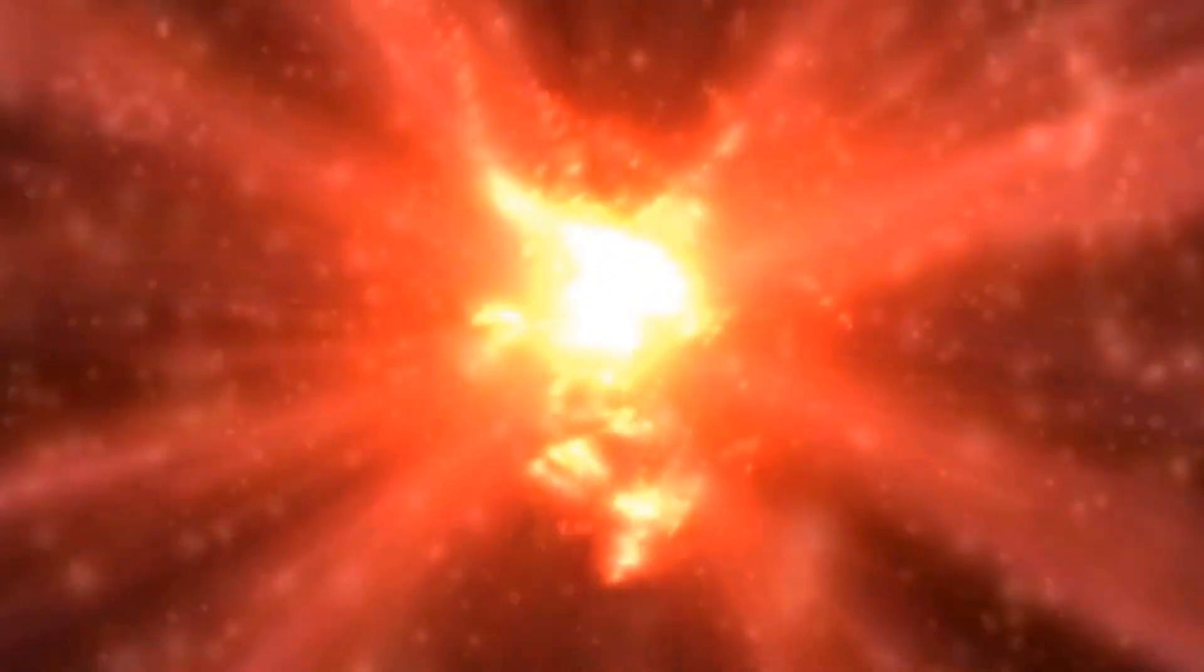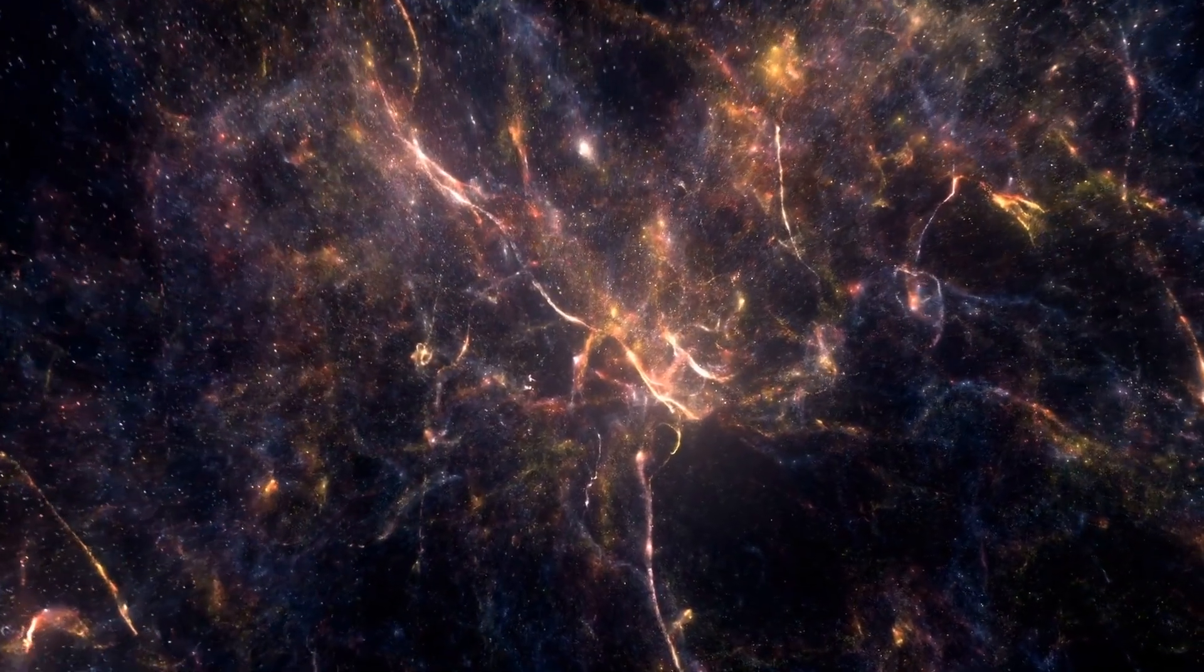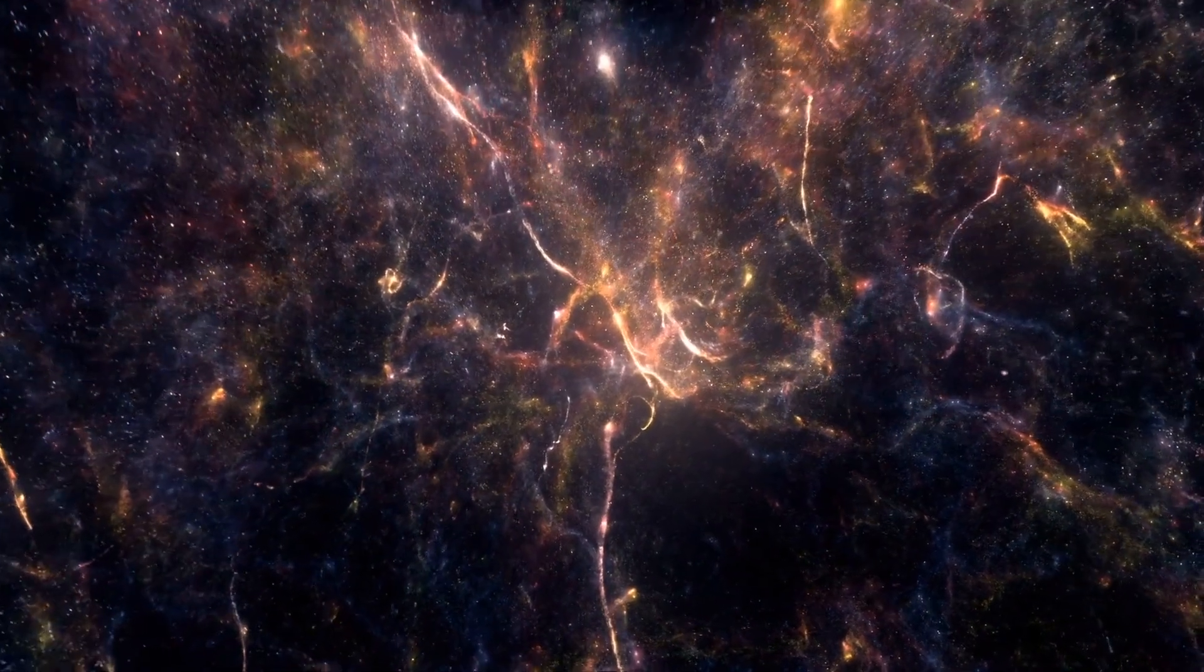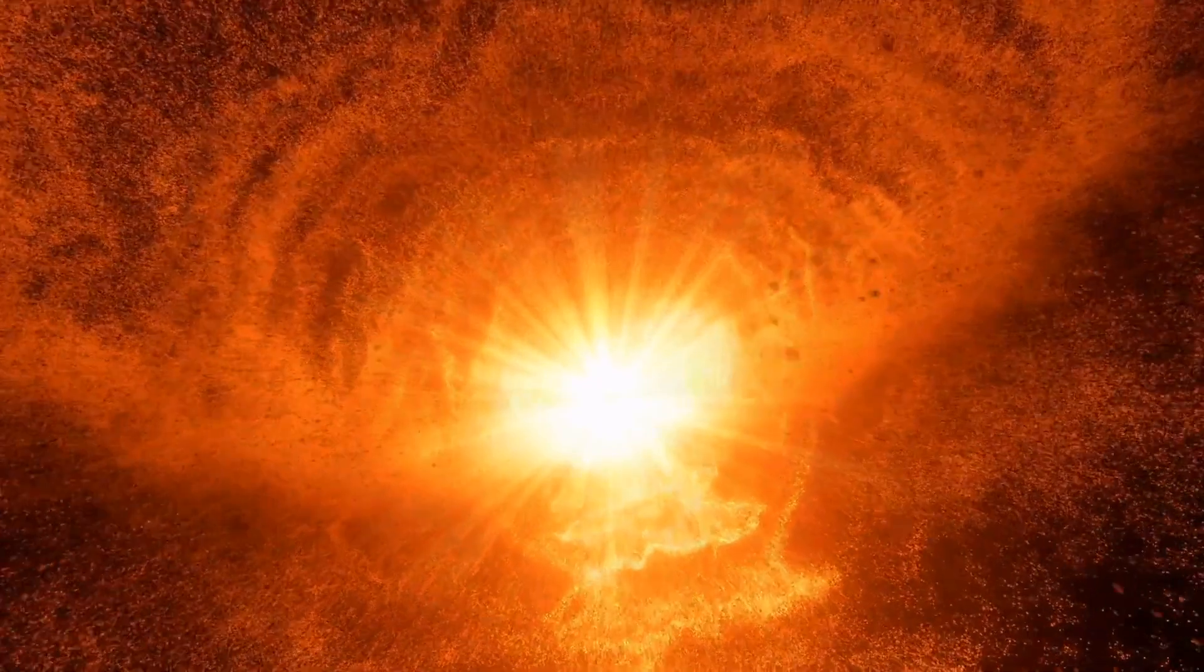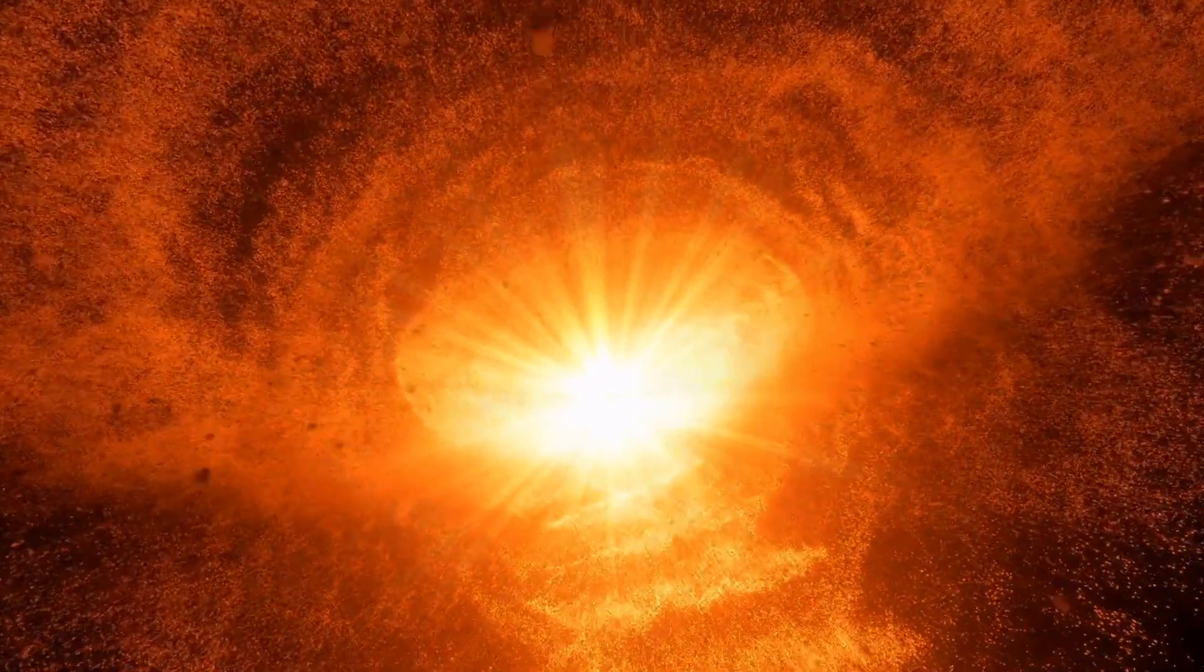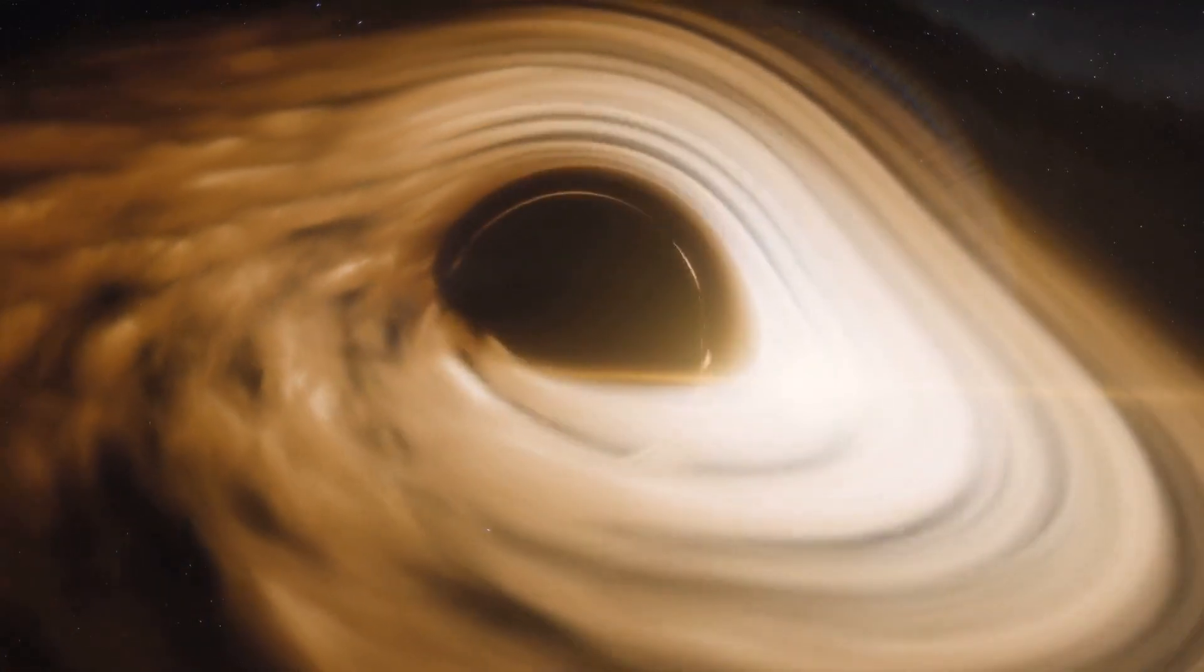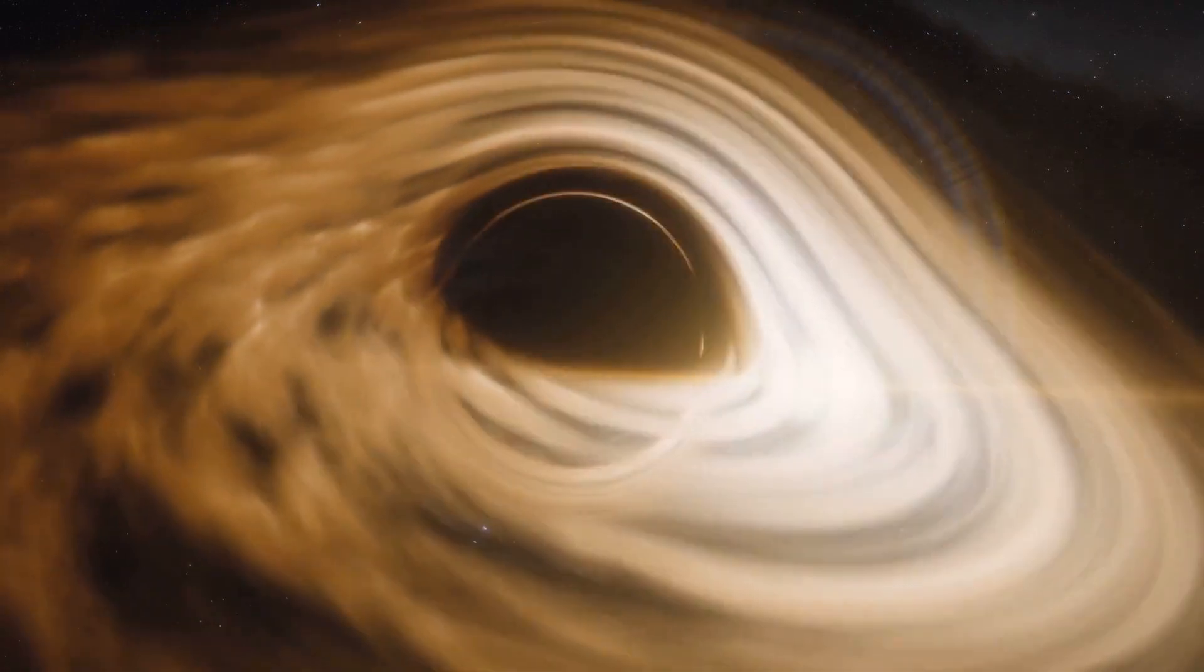The predictions on when Betelgeuse will go supernova are abundant, but consensus is elusive. Some suggest it might be in its carbon-burning phase, implying a collapse could occur within a few decades. Regardless of the timeline, it is widely agreed that Betelgeuse is on the brink of becoming a supernova. The aftermath of this cataclysmic event will leave behind either a black hole or a neutron star depending on the mass of the remnants.